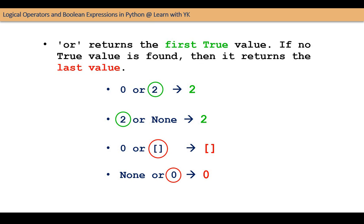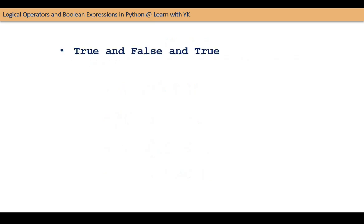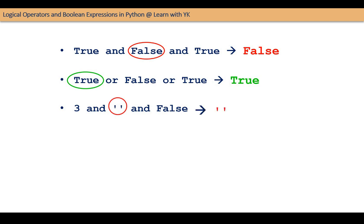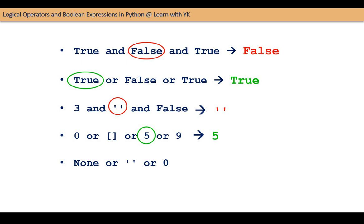With these concepts, we are now ready to evaluate any logical expression. Consider TRUE AND FALSE AND TRUE: it involves only AND, so it evaluates to the first FALSE value, which is FALSE. An expression with only OR operators gives the first TRUE value, that is TRUE. In an AND-only expression, the first FALSE value is the empty string. In an OR-only expression, the first TRUE value is the number 5. In an OR-only expression with no true value, the result is the last value, 0. In an AND-only expression with no false value, the result is the last value, 23.